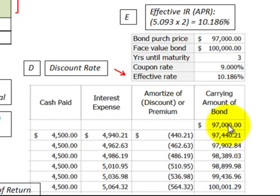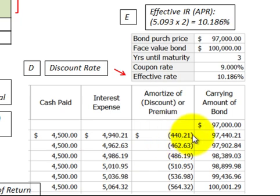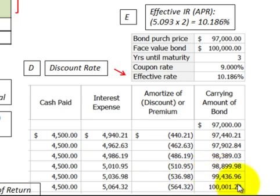To amortize the bond: take the first period carrying value of $97,000 times the effective interest rate of 5.093%, giving an interest expense of $4,940. Subtract the interest payment made to bondholders of $4,500 from $4,940, and the difference of $440 is the amortized discount. Add that $440 to the beginning carrying value to get the new carrying value for the next period. Repeat this procedure each period until the carrying value reaches $100,000 at maturity.